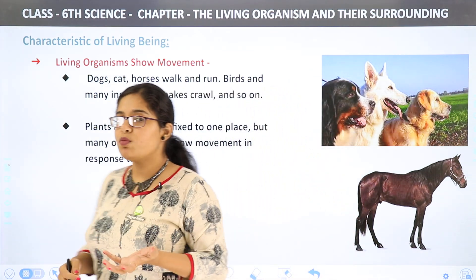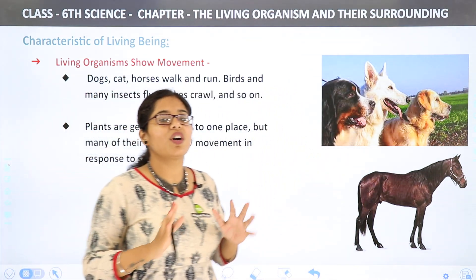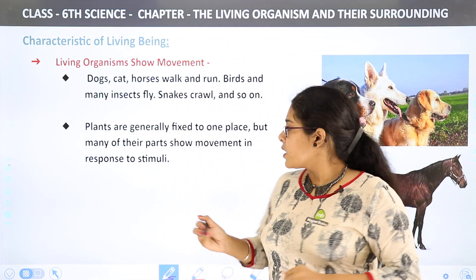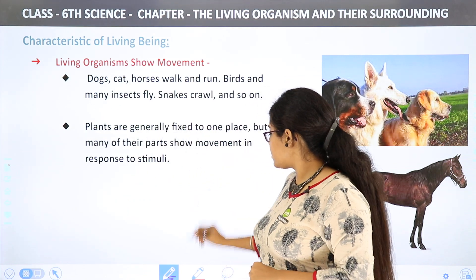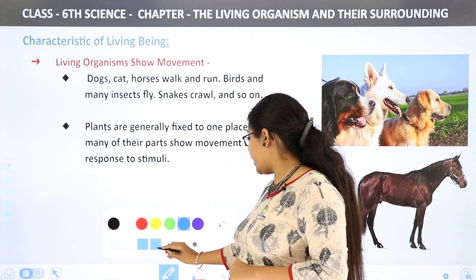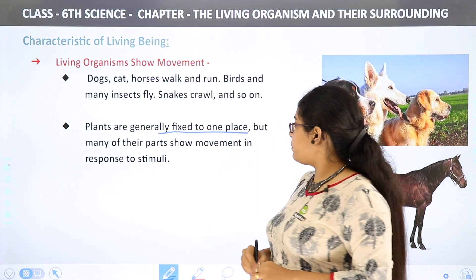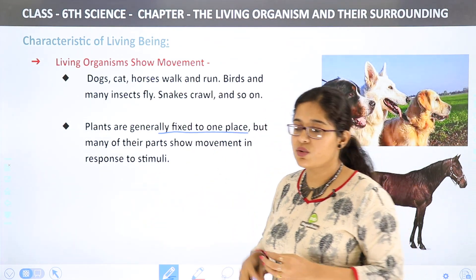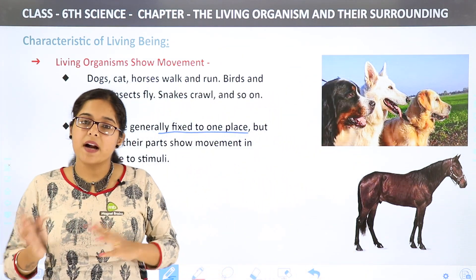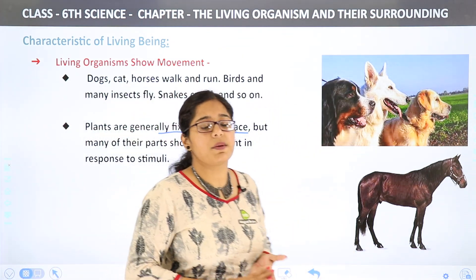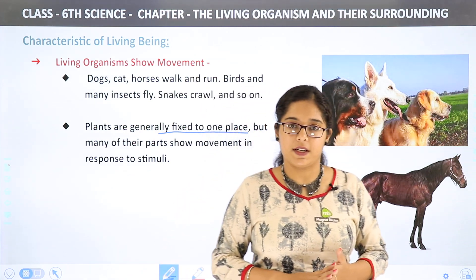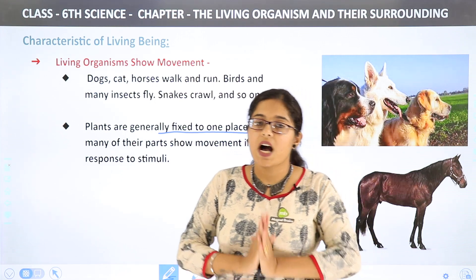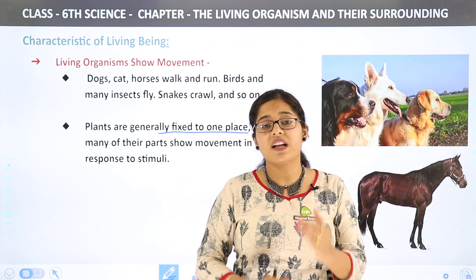If we talk about animals, we can see movement. But plants do not move — plants are generally fixed to one place; they just grow. However, many of their parts show movement in response to stimulus. If there is an external stimulus, their parts show movement, like the touch-me-not example we showed. I hope these characteristics of living things are clear to all of you.